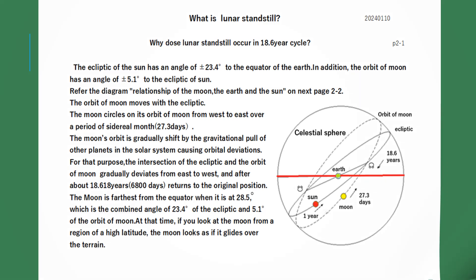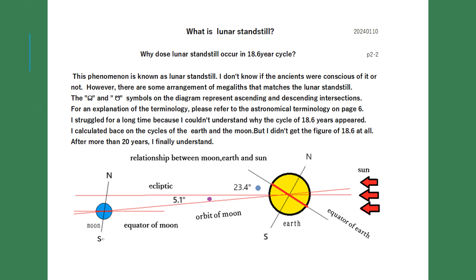This phenomenon is known as lunar standstill. I don't know if the ancients were conscious of it or not; however, there are some arrangements of megaliths that match the lunar standstill. The ascending and descending intersections shown on the diagram represent the points where the moon's orbit crosses the ecliptic. I struggled for a long time because I couldn't understand why the cycle of 18.6 years appeared. I calculated based on the cycles of the Earth and the moon but didn't get the figure of 18.6 at all. After more than 20 years, I finally understood.